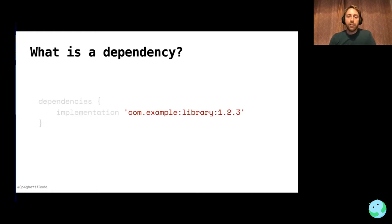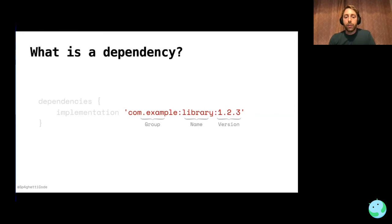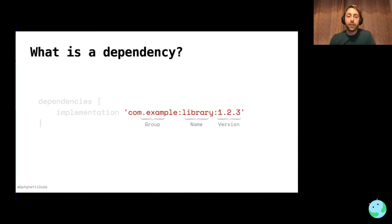Finally, you have the dependency itself, which is split into three components: the group, the name, and the version. The group tends to be the library's domain in reverse order — for example, com.google. The name is the name of the library itself, such as okhttp or retrofit. The version is a string that defines the version — it can be an outright version like 1.2.3, or 1.2+ to represent any dependency starting with 1.2, among other configurations.